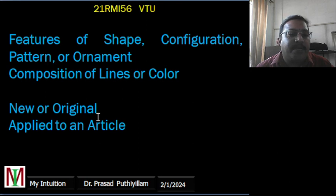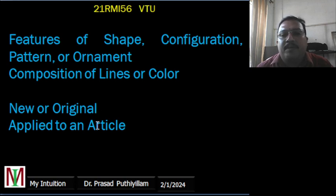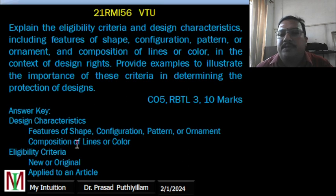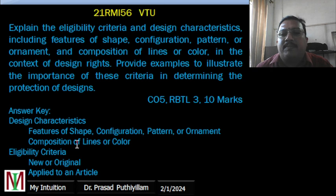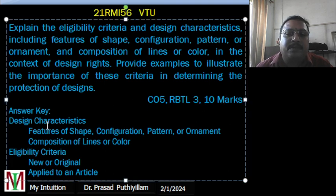The topic covered in this class video is: features of shape, configuration, pattern or ornament, composition of lines or color, and new or original applied to an article. The exam question is: 'Explain the eligibility criteria and design characteristics including features of shape, configuration, pattern or ornament and composition of lines or color in the context of design rights, and provide examples to illustrate the importance of these criteria.' This is a level 3 question worth 10 marks.